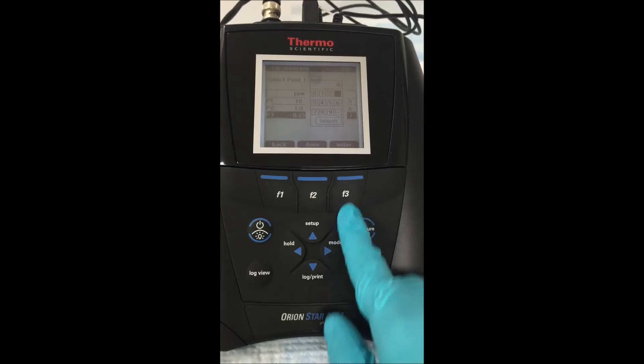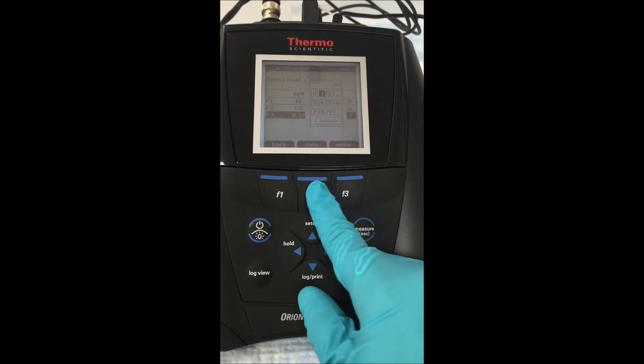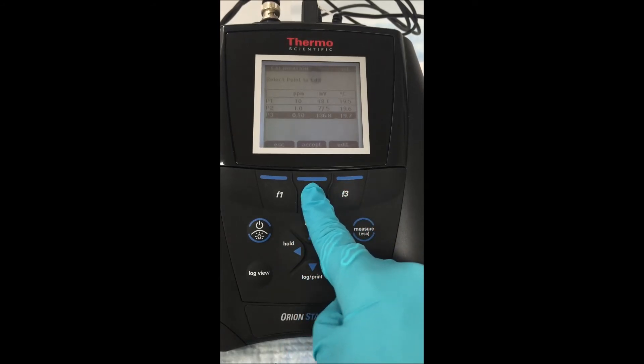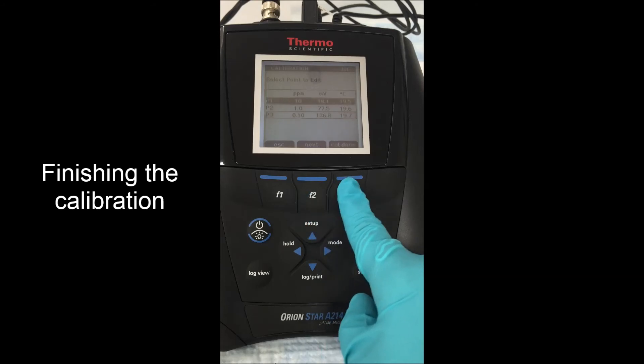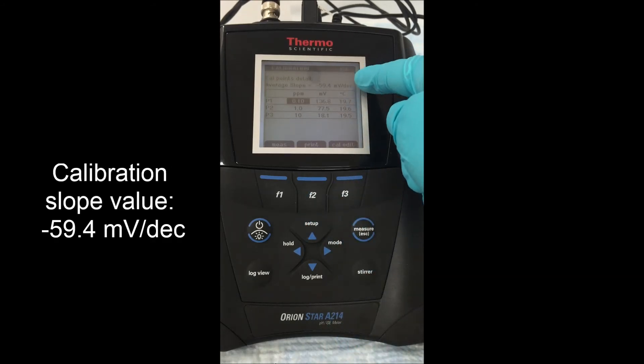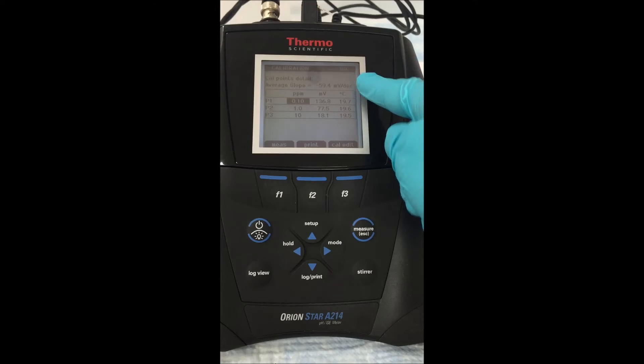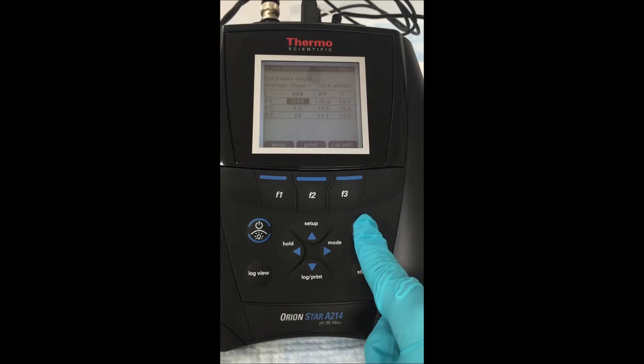Once we've input that final calibration point at 0.1 parts per million, we're going to finish our calibration. Hitting the button that says Cal Done, the meter is then going to display the slope value. This slope should be between 54 and 60, and 59.4 is an accurate slope value.